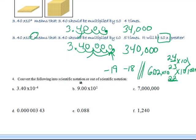Convert the following into scientific notation or out of scientific notation. This one is already in scientific notation with a negative exponent, so we're going to divide. Starting with 3.40, divide by 10 four times, put your new decimal place and zeros, and there's your new number. This next one is times 10 to the first, so move the decimal one place — you end up with 90.0.